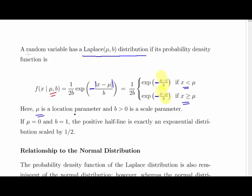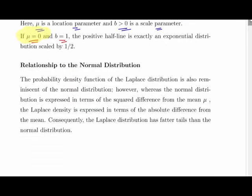Here mu is the location parameter and b is the scale parameter where b is greater than 0. If mu is equal to 0 and b is equal to 1, the positive half line is exactly an exponential distribution scaled by 1 half. The key thing here really is that mu will equal 0 in most cases. And if it's not equal to 0, we adjust it so it is equal to 0 and then make the adjustment back after the fact.